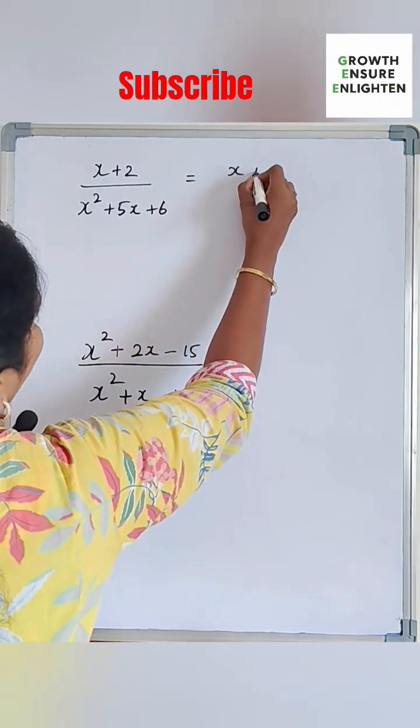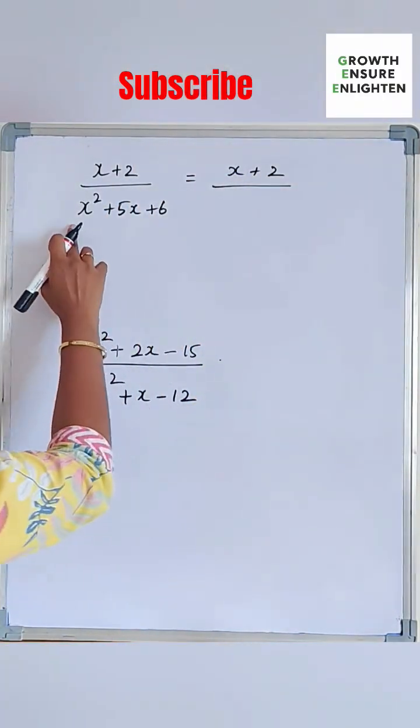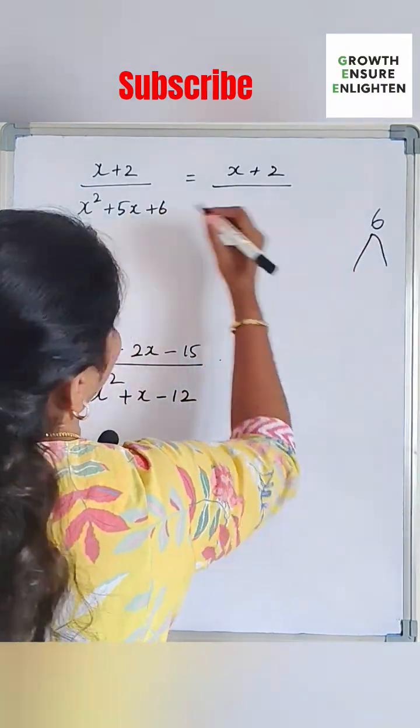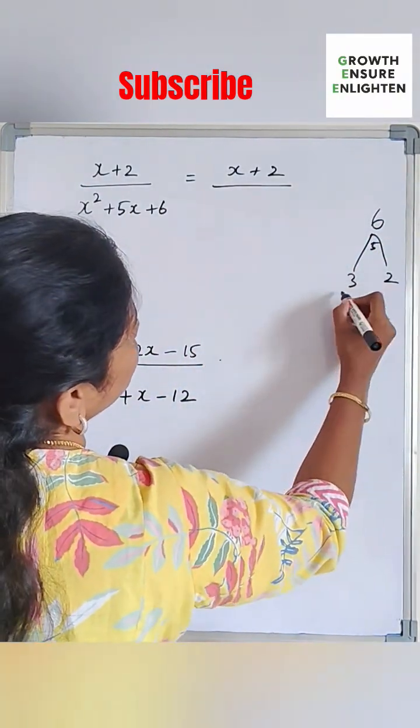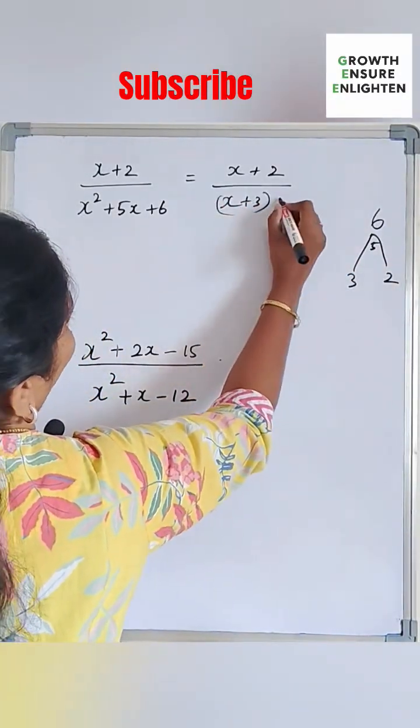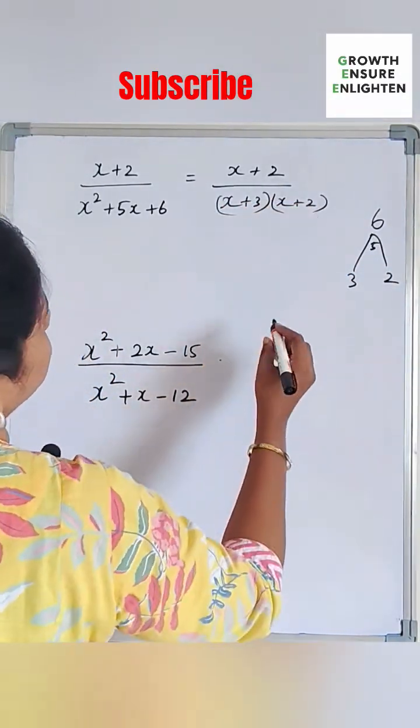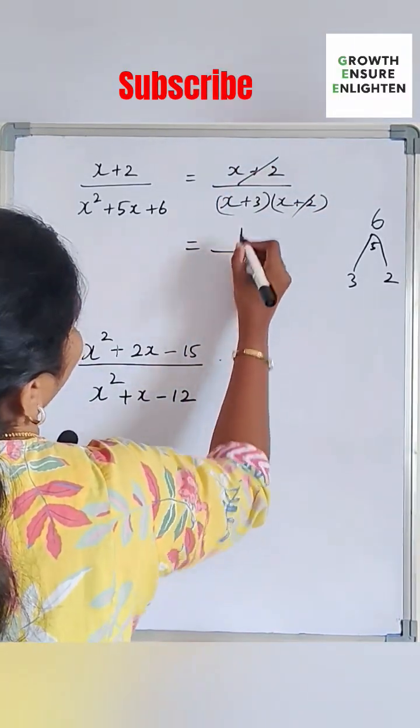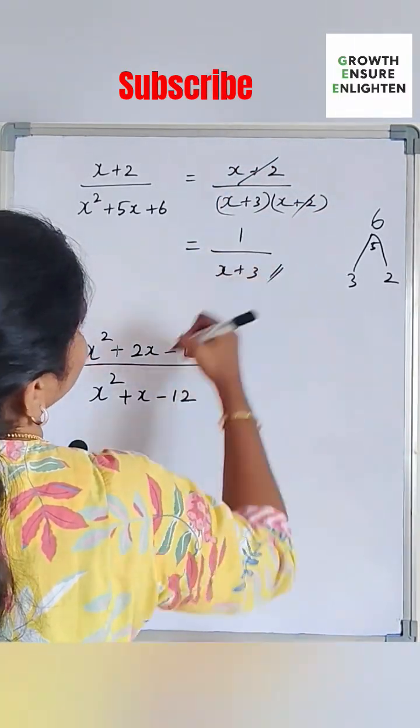So x plus two, we can't do anything. I am putting the same. About this, how to factorize? Put the six and the middle term is five. So the two numbers are three, two. Three times two is six, three plus two is five. So x plus three and x plus two are the factors. We can cancel this term and in the numerator it is one and the denominator is x plus three. This is the answer.